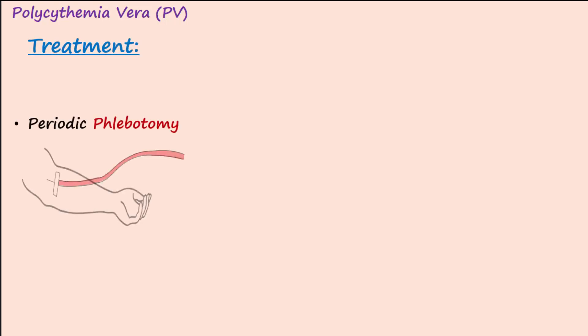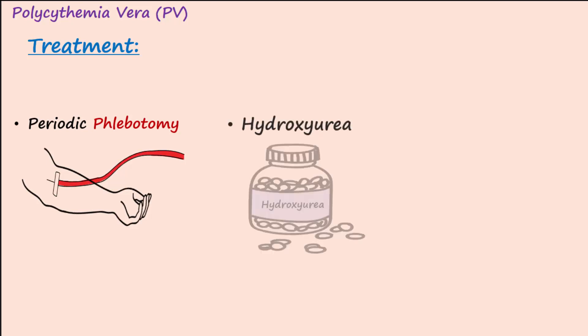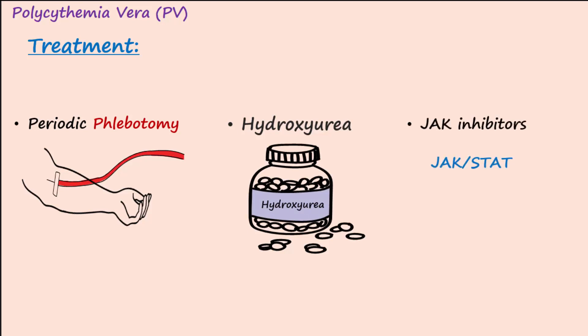Treatment for polycythemia vera includes periodic phlebotomy to reduce blood viscosity, or a medication called hydroxyurea that helps reduce the elevated red cells. JAK inhibitors have also been developed that reduce overactivity of JAK-STAT signaling pathways.